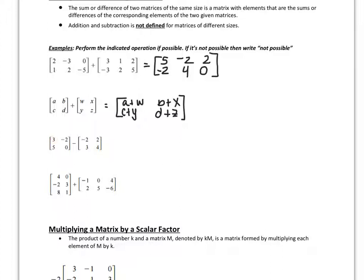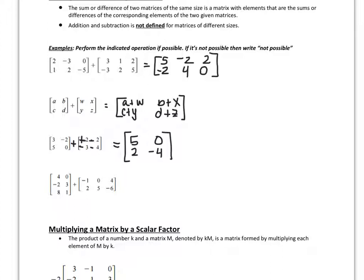Subtraction works just the same. You're going to do 3 minus negative 2, negative 2 minus 2, 5 minus 3, 0 minus 4. Some people prefer to distribute the negative to all of the pieces and change it to plus. So 3 plus 2 is 5, negative 2 plus 2 is 0, 5 minus 3 is 2, and 0 plus negative 4 is negative 4. However you decided to do it, that is your difference of those two matrices.